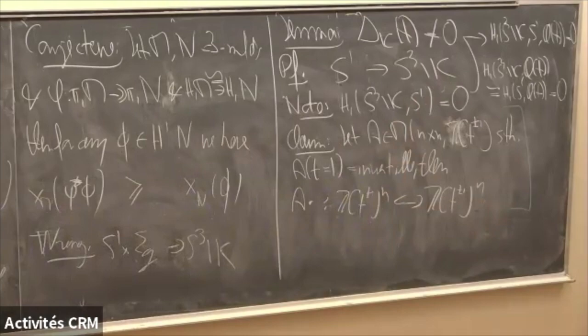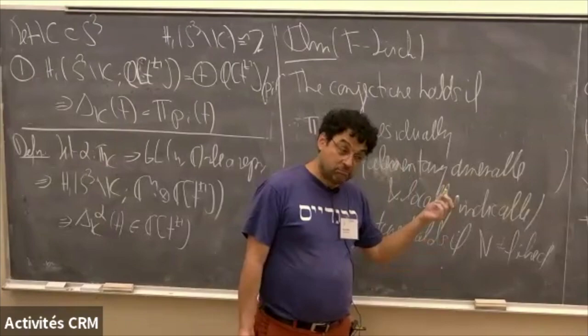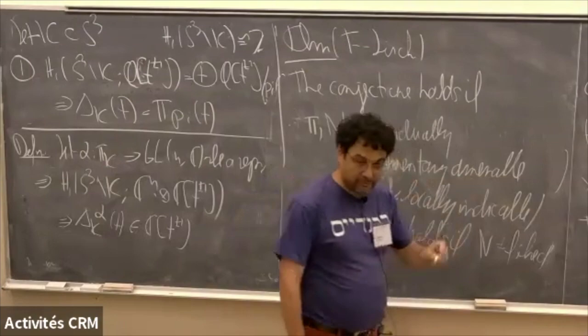Let me explain the adjectives. Elementary amenable is basically a group built out of finite groups and abelian groups — for example, any virtually solvable group is elementary amenable. Locally indicable means: for any finitely generated non-trivial subgroup H of G, there exists an epimorphism from H onto ℤ. For example, free groups are locally indicable. A theorem going back to Howie states that any 3-manifold group with b₁ > 0 is locally indicable.